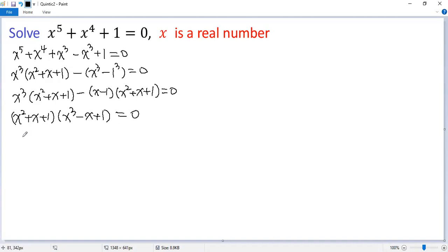So we have two options. One, x squared plus x plus 1 equals 0. Two, x cubed minus x plus 1 equals 0.